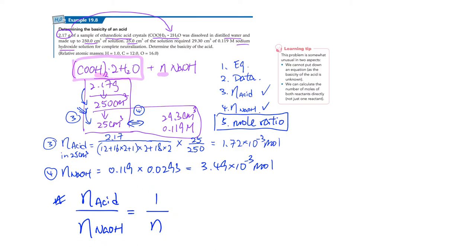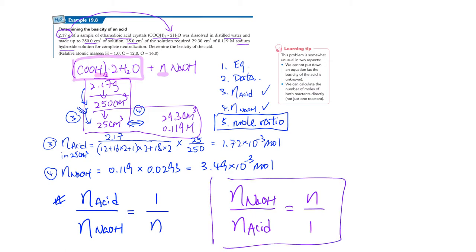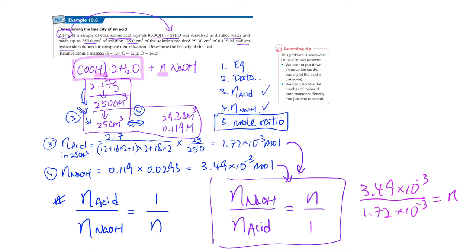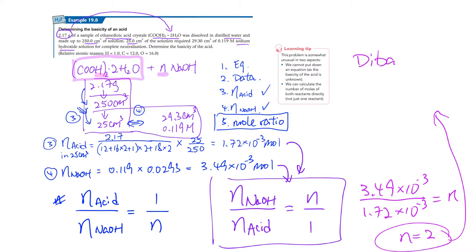Substituting: 3.49 × 10⁻³ over 1.72 × 10⁻³ equals n, which gives n = 2. So this is a dibasic acid, or you can say the basicity of the acid equals 2. Looking at the formula (COOH)₂·2H₂O, it releases 2 hydrogen ions — each COOH group releases one H, and with two COOH groups we have 2H released per molecule.